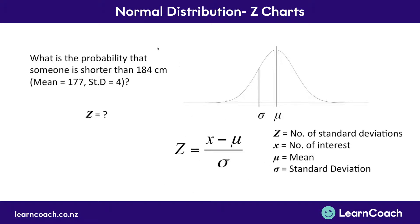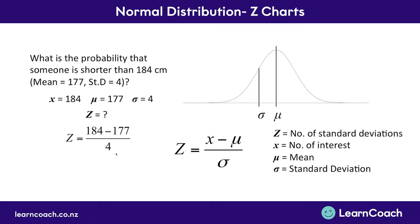We don't actually know what our z-score is — they haven't told us that in the question, so we need to find it. They have told us a number of interest: what is the probability that somebody is shorter than 184 cm? So 184 is the point we want to know about. They've also said there's a mean of 177 cm and a standard deviation of 4. We're trying to find the probability. If we're not doing it on our calculator, we have to use a big z-chart, and to use a z-chart, we need to know the z-score to look up. If we plug our numbers into the formula — x of 184, a mean of 177, and a standard deviation of 4 — that gives us a z-score of 1.75.